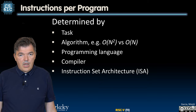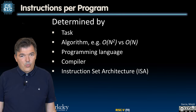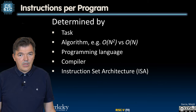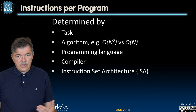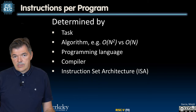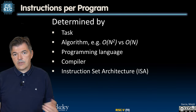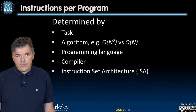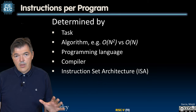How many instructions does it take to execute a program? It really depends on what kind of task we are trying to complete. For example, performing image compression is very different from playing a game of Go. Each of these tasks can be implemented using different algorithms, and these algorithms can have vastly different numbers of instructions to be executed. For example, things we learned in 61A — whether complexity is O(n) or O(n²) — matter a lot here.